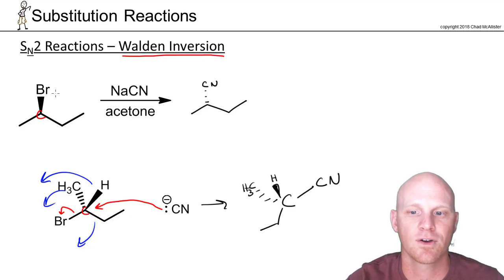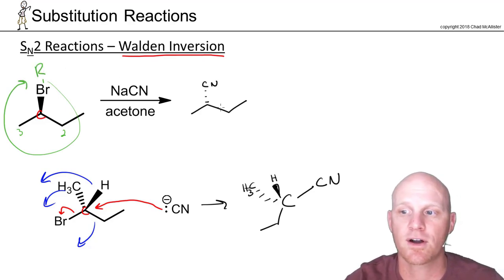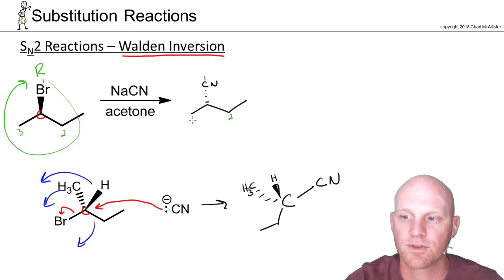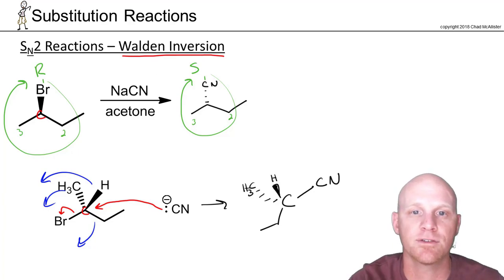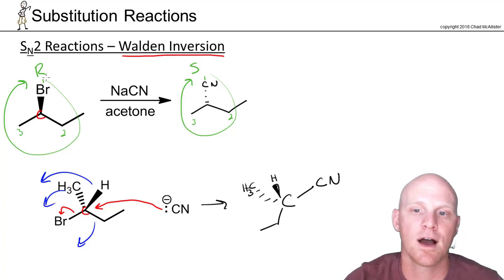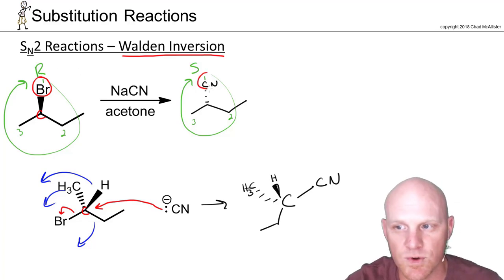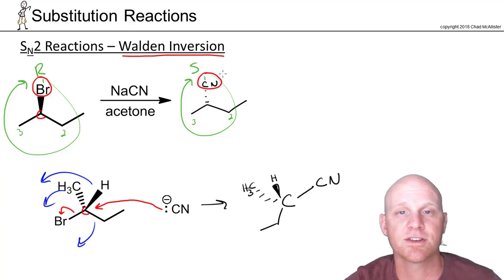Assigning priorities on the reactant side: bromine is number one, giving a right-handed turn — that's R configuration. On the product side, the cyano carbon is number one, giving a right-handed turn, but with hydrogen on the wedge, this is actually S. That's the inversion of configuration. When the leaving group and the incoming nucleophile share the same priority ranking, R always converts to S and vice versa.